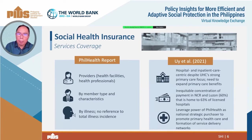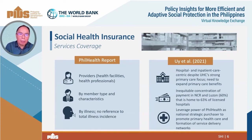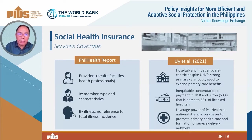A recent study by John Aoi and colleagues on PhilHealth, released in 2021, highlighted three patterns. First, claims are hospital inpatient-centric, despite the UHC's primary care focus, highlighting the need to expand primary healthcare benefits. Second, there is an inequitable concentration of payments in NCR and Luzon, amounting to 60% of claims, primarily because 63% of licensed hospitals are in the area. Third, there is underutilized leverage of PhilHealth as a national strategic purchaser to promote primary healthcare and the formation of service delivery networks.